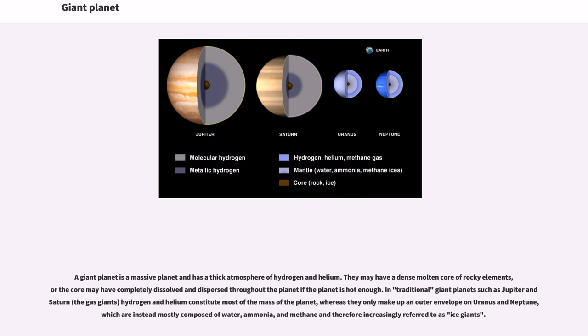A giant planet is a massive planet and has a thick atmosphere of hydrogen and helium. They may have a dense molten core of rocky elements, or the core may have completely dissolved and dispersed throughout the planet if the planet is hot enough. In traditional giant planets such as Jupiter and Saturn, the gas giants, hydrogen and helium constitute most of the mass of the planet, whereas they only make up an outer envelope on Uranus and Neptune, which are instead mostly composed of water, ammonia, and methane and therefore increasingly referred to as ice giants.